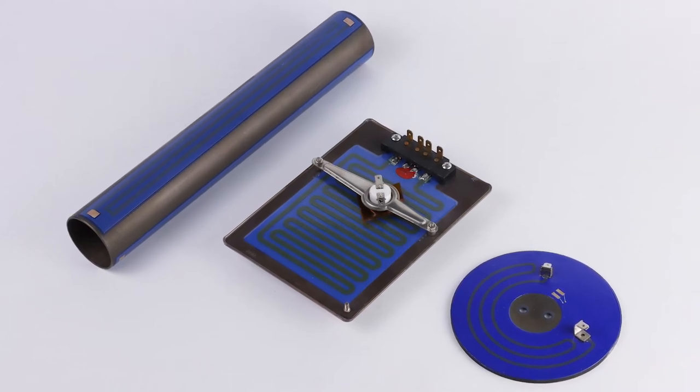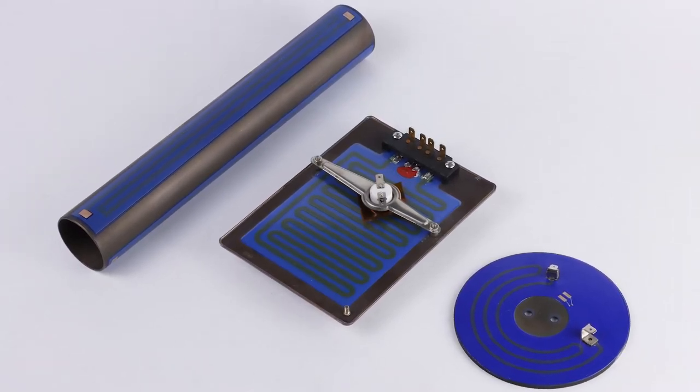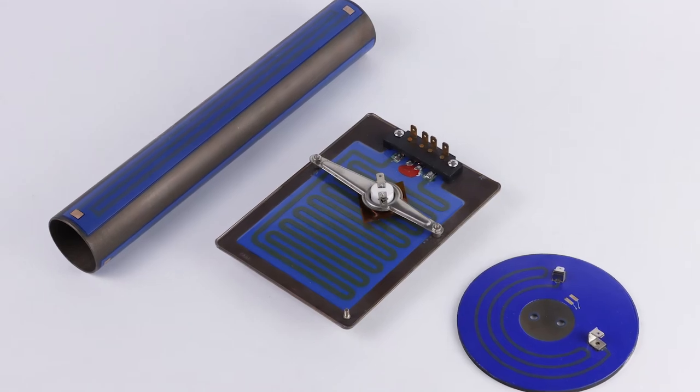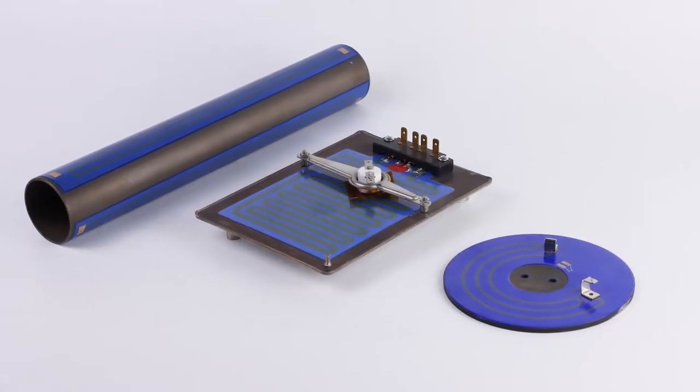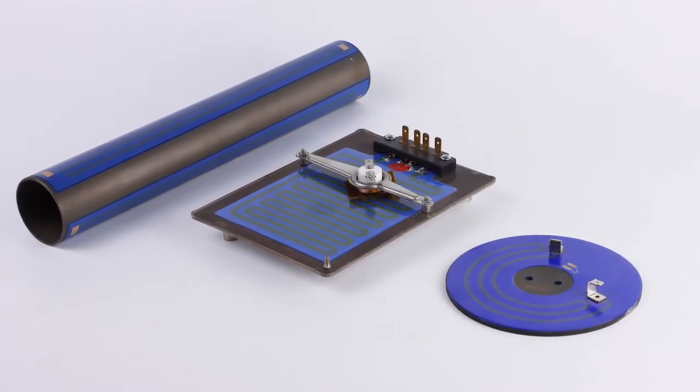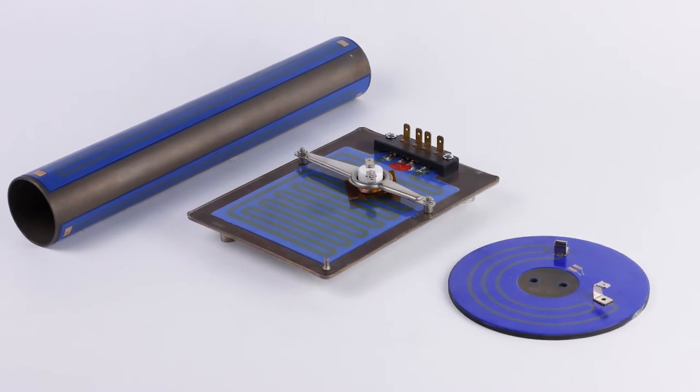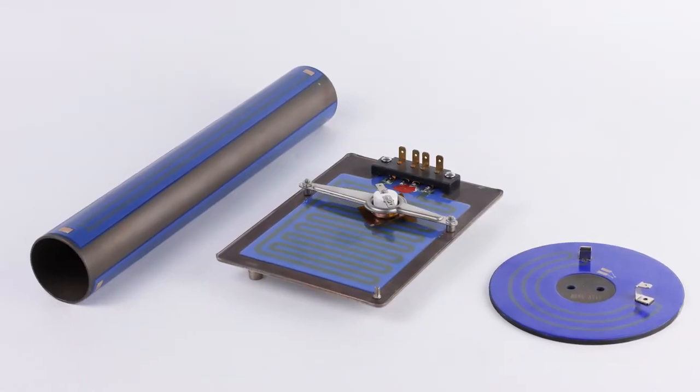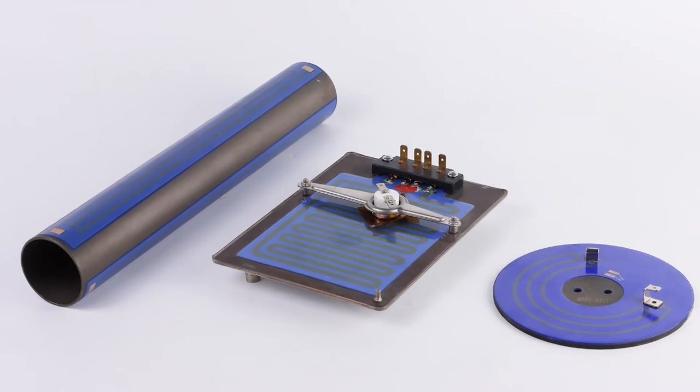The thick film heaters made by Jay use the most advanced thick film technology in the world to directly print and sinter the insulating film and the heating resistor film on the stainless steel plate or pipe by screen printing and sintering.